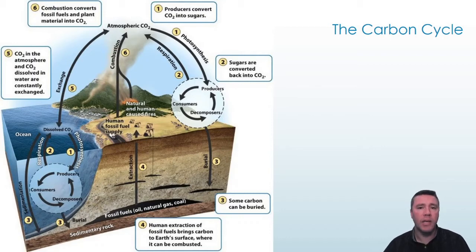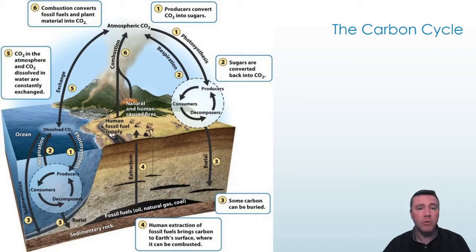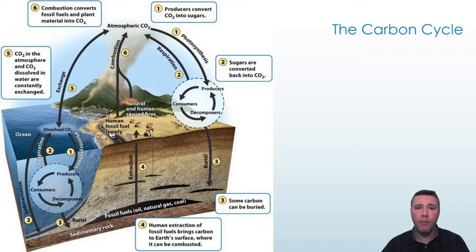Another carbon sink involves the formation of fossil fuels. Over tens of millions of years, decaying organic material forms into oil, coal, and natural gas. Up until the Industrial Revolution, these fossil fuels were excluded from circulation in the carbon cycle. However, with the discovery that those fuels could be used as an energy source, those stored carbon compounds were extracted from the earth and combusted. It's this combustion of fossil fuels that has increased the quantity of carbon, mainly in the form of carbon dioxide, released into the atmosphere.